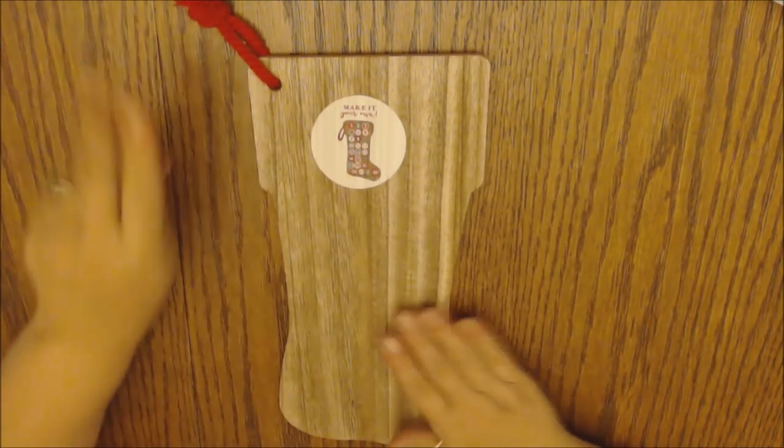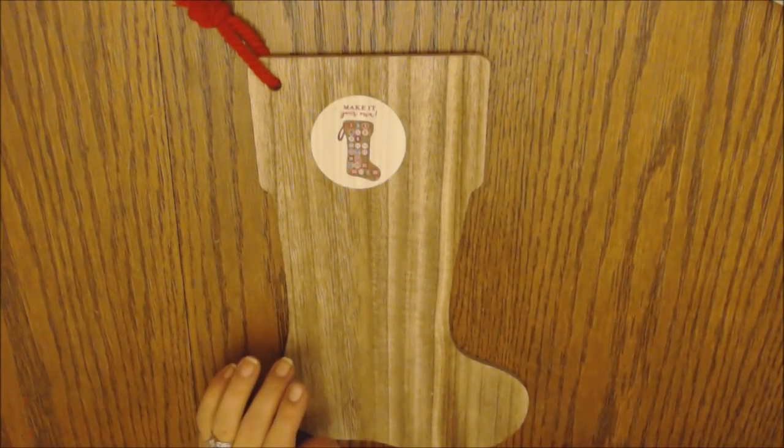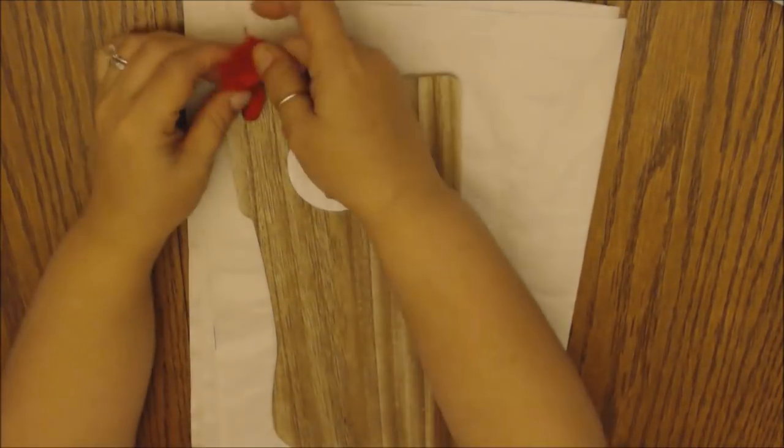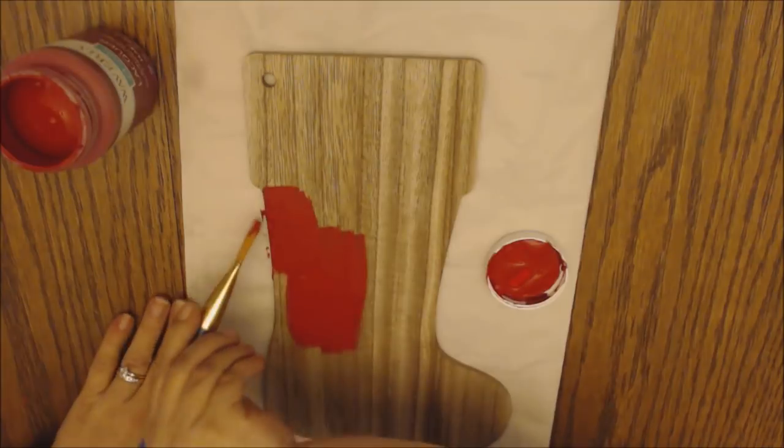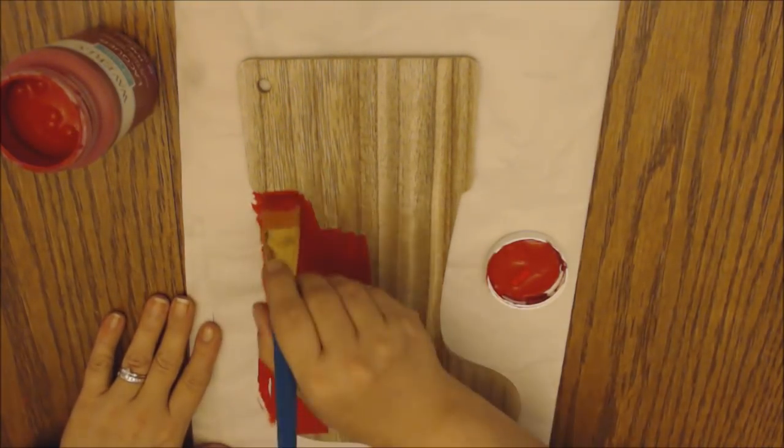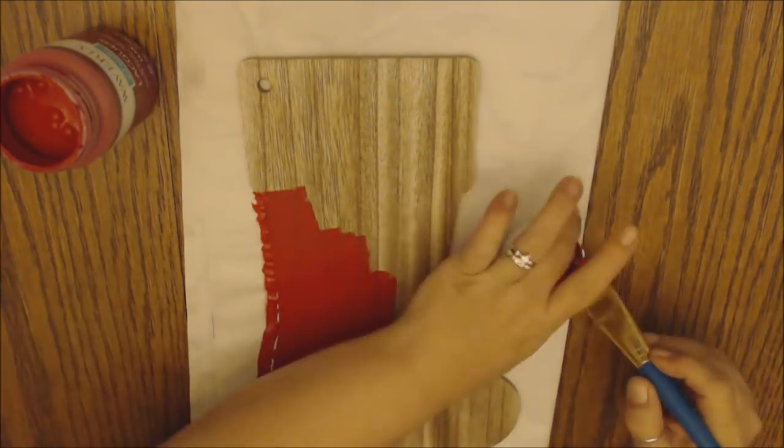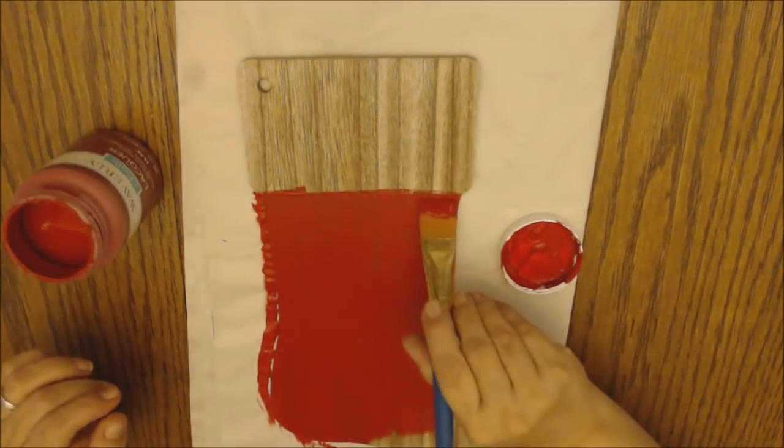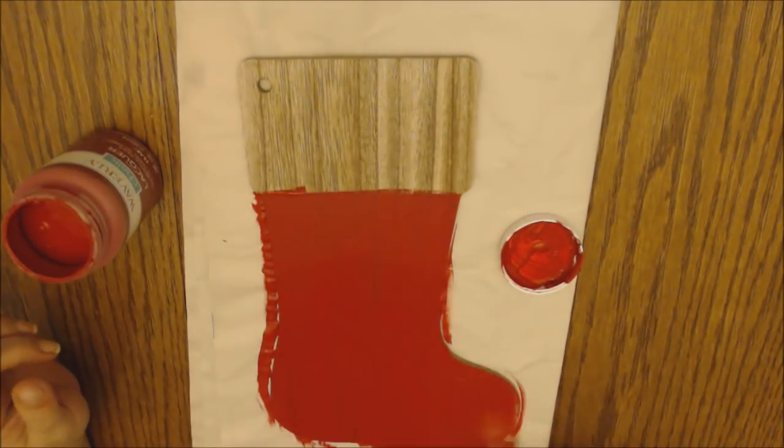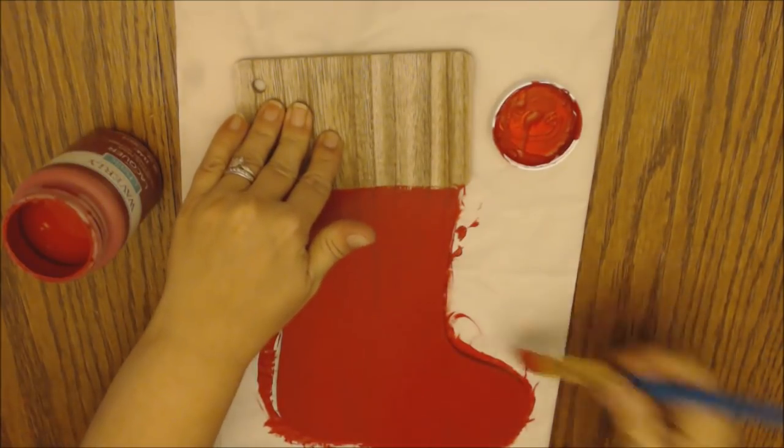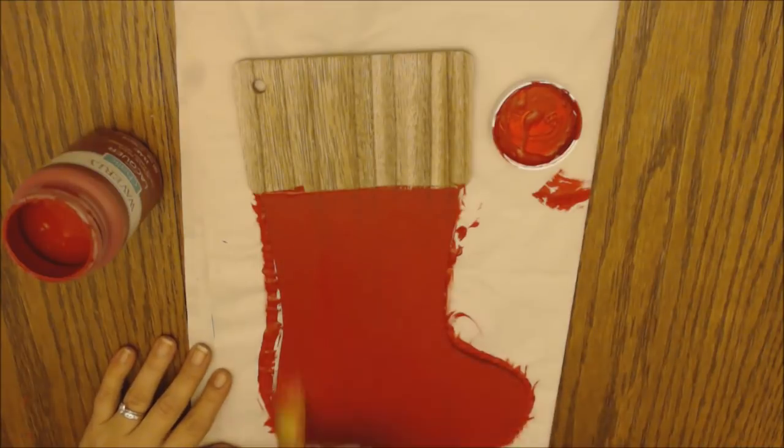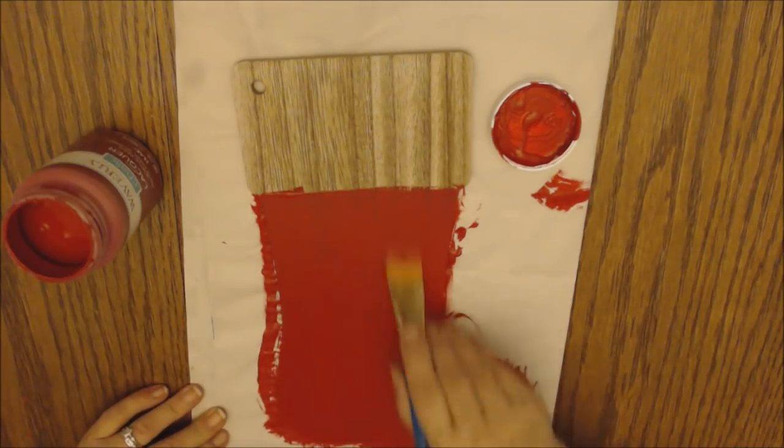So now to get started, we are going to start by painting our base coat on our stocking. And I'm going to be using, like I said, the red. And I did do two coats of the red. You could just do one if you wanted to, which would be absolutely beautiful because you really could see the wood grain coming through. But that just wasn't the look that I was going for with this. But again, I just did two coats. And I did do the sides all the way around to make sure that that red was on the sides of the stocking as well. Then you're going to let it dry.